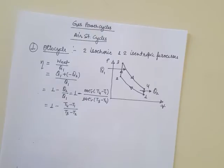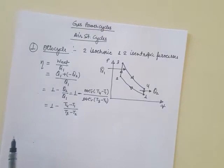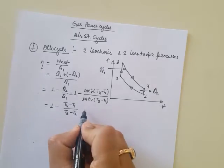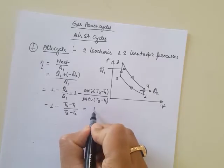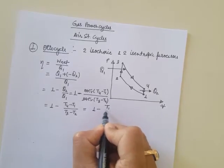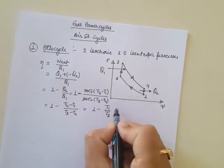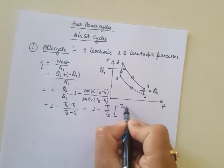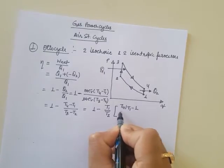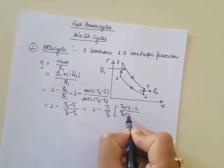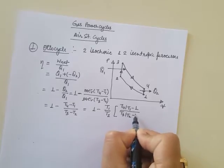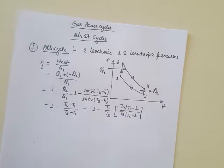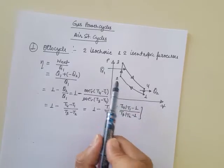The thing to remember here is that as we are talking of an air standard cycle, air will be considered as an ideal gas, and Cp and Cv values will be independent of the process — they will be considered constants. If we take T1 common from the numerator and T2 from the denominator, we get (T4/T1 - 1) / (T3/T2 - 1).